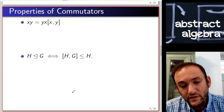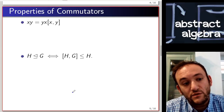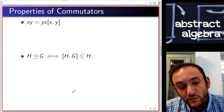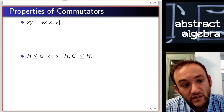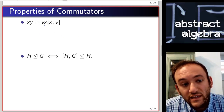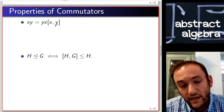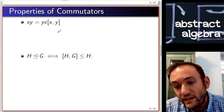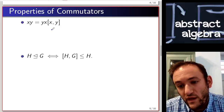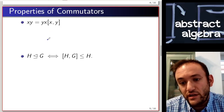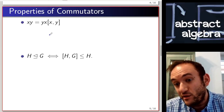So we have a sense of what a commutator subgroup looks like in particular examples, but why is it useful? Well, this first property captures some of the importance: we can see that xy equals yx times the commutator [x, y]. This tells us that when [x, y] is the identity, x and y commute — so in some way, the commutator is capturing how much these things are non-commuting.